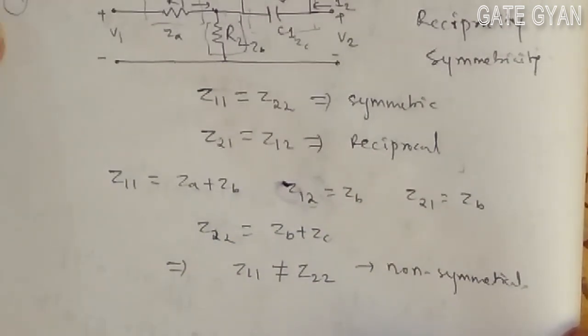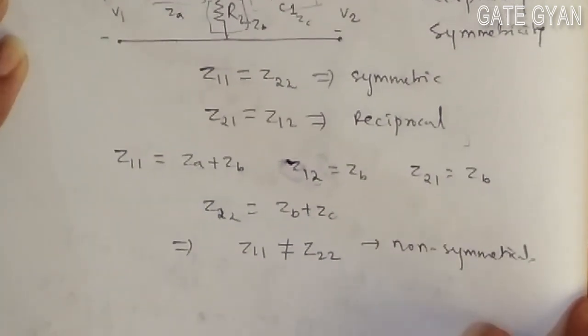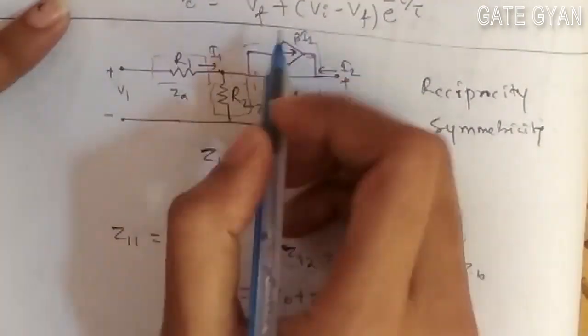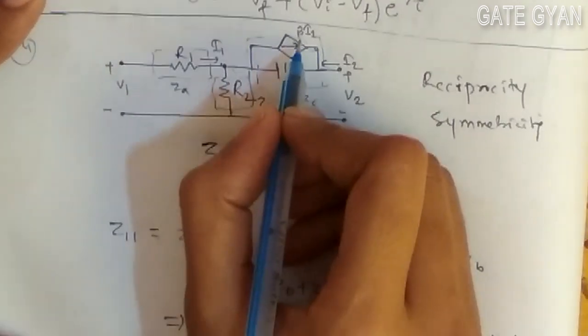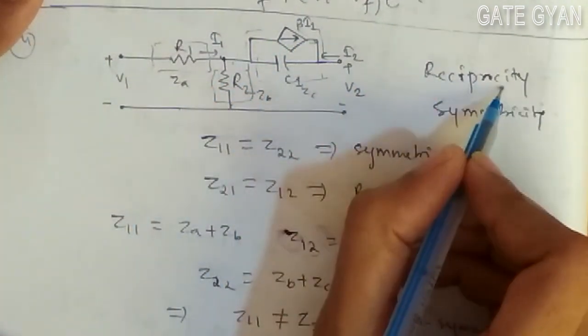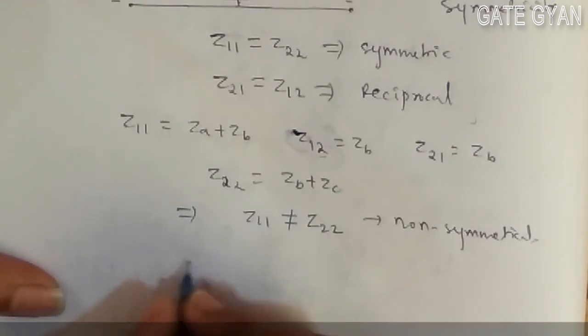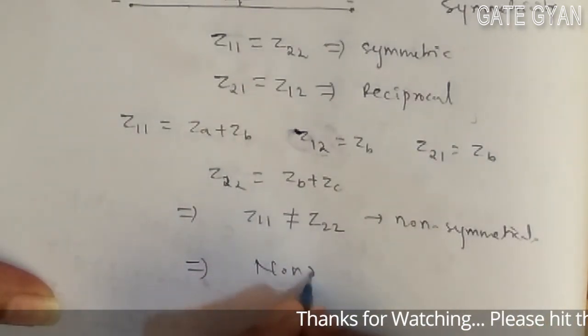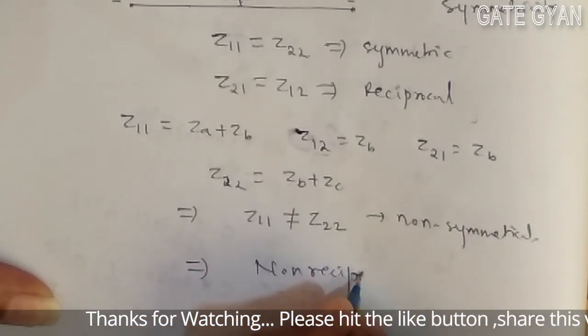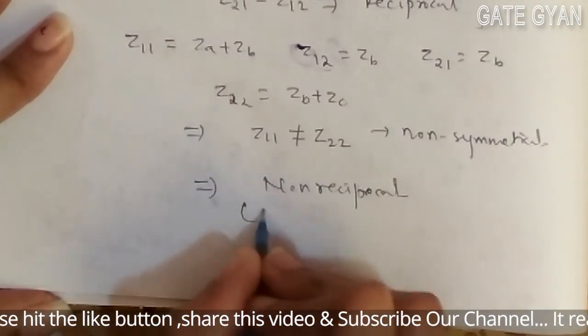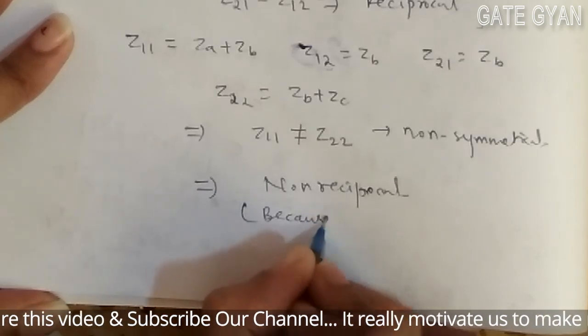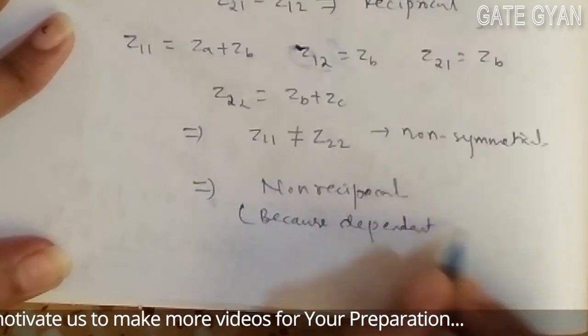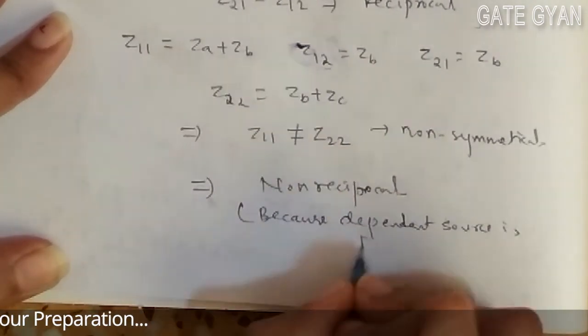By simply knowing that whenever a dependent source is present in the circuit, the circuit cannot be reciprocal, so it's going to be non-reciprocal. Why? Because a dependent source is present in the circuit.